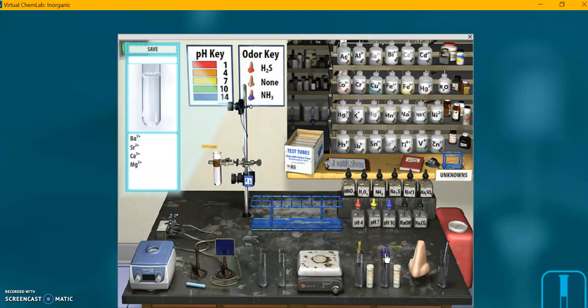pH vapor, so pH paper held over the mouth of the test tube to see what pH the vapor has. A nose for sniffing. Up here we've got an odor key, so you can see that.